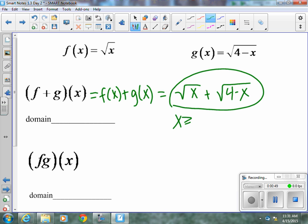Our domain rules tell us anything under a radical has to be greater than or equal to 0. So x has to be greater than or equal to 0, and x has to be less than or equal to 4, which means our domain will go from 0 to 4.